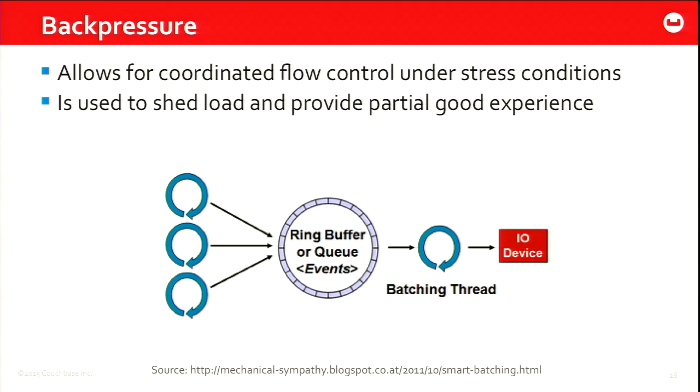One technique to implement backpressure and fail fast is a ring buffer — essentially a bounded queue with a bounded size, not an unbounded queue. This is a technique we use in the Java SDK to separate application threads from the IO layer and provide explicit backpressure. If your application threads are sending so many requests into the Java client that we can't serve them, our ring buffer will be full, and at that point we immediately fail back saying you're overrunning the service. It's then up to you to decide whether to retry or fail back. If you've used the new SDK and wondered what the backpressure exception is about, that's the reason.